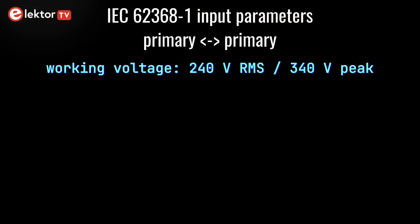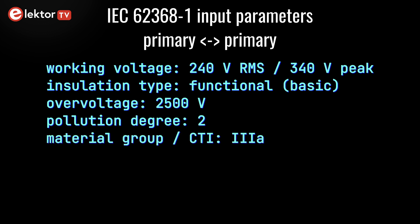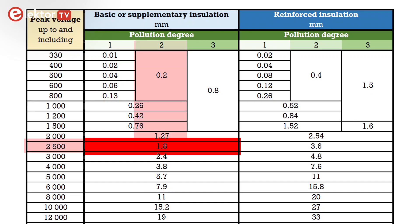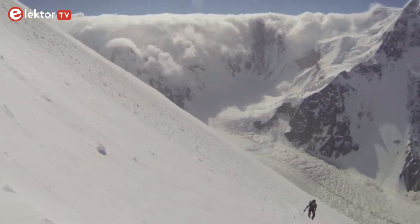For the clearance and creepage distance inside the primary part — for instance around relay switch contacts — we use these values: working voltage 240 volts RMS or 340 volts peak, insulation type functional which means basic, overvoltage 2.5 kilovolts, pollution degree 2.0, material group or CTI 3A, and altitude correction 1. These are the same as before except for the insulation type, which is now functional instead of reinforced, and for which we use the basic insulation values. For clearance we find 1.8 mm, and for creepage 2.5 mm. If the clearance is also set to 2.5 mm like the creepage, then it's good for altitudes up to 4500 meters.